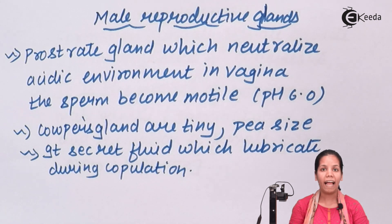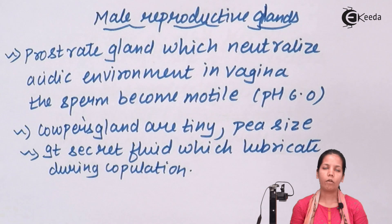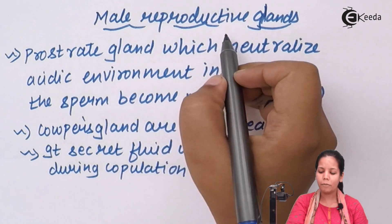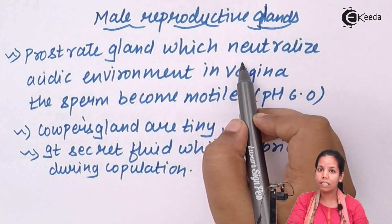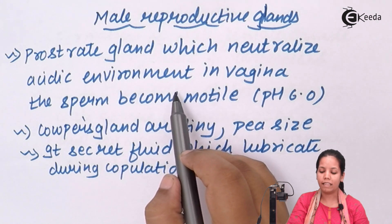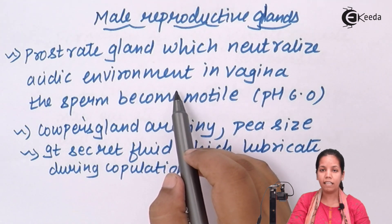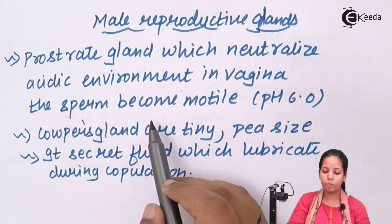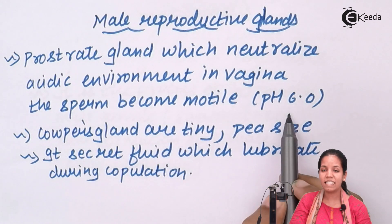The prostate gland makes sure that there is a neutral environment present. Inside this neutral environment, at around pH 6, the sperm can actually survive. The prostate glands neutralize the acidic environment of the vagina, which may otherwise kill the sperm. They make the environment neutral so that the sperm remains motile and can move to fertilize the egg.